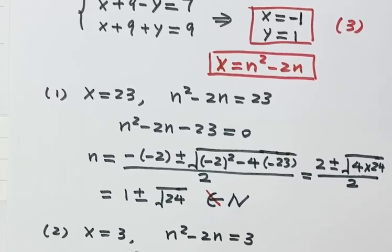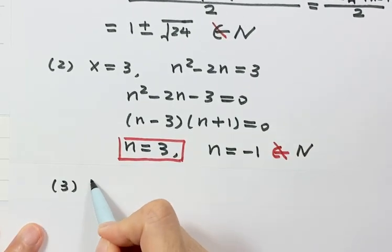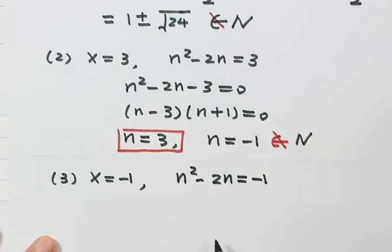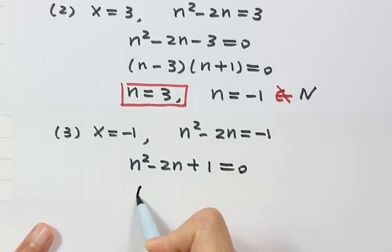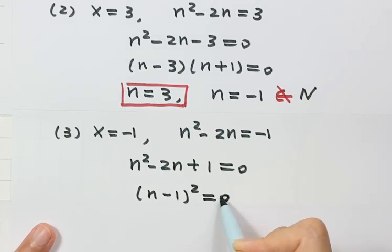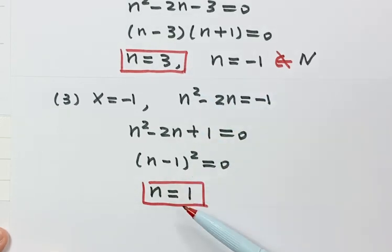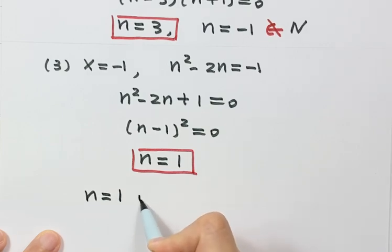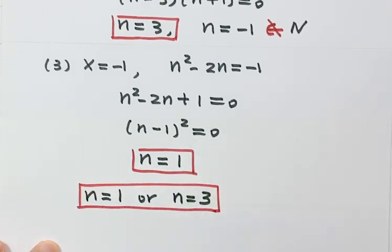Third case, x equals negative 1: n squared minus 2n equals negative 1, so n squared minus 2n plus 1 equals 0. Completing the square gives n minus 1 squared equals 0, so the solution is n equals 1. Since 1 is a natural number, that's valid. So there are two solutions: n equals 3 and n equals 1. The final answer for this question is n equals 1 or n equals 3. Thanks for watching, see you next time.